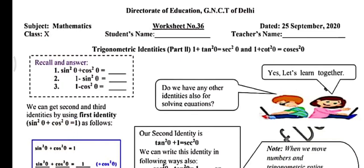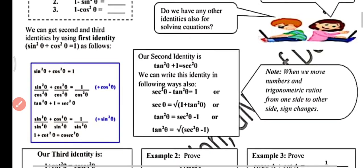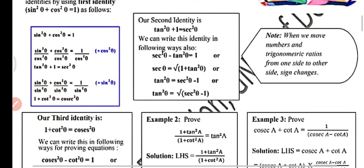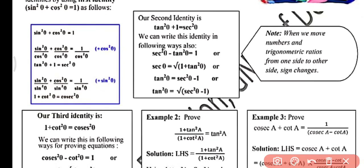Starting from sin² θ plus cos² θ equals 1, we divide the whole equation by cos² θ. On the right-hand side, 1 upon cos² θ becomes secant² θ. On the left-hand side, sin² θ over cos² θ becomes tan² θ, and cos² θ over cos² θ becomes 1. So tan² θ plus 1 equals secant² θ.